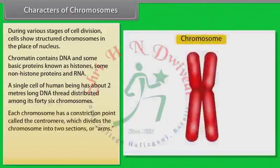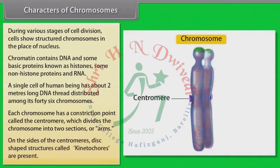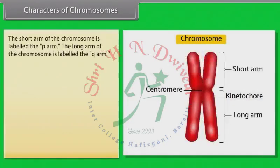Each chromosome has a constriction point called the centromere, which divides the chromosome into two sections or arms. On the sides of the centromere, disc-shaped structures called kinetochores are present. The short arm of the chromosome is labeled the P-arm, and the long arm is labeled the Q-arm.